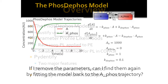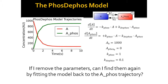The Phos-Dphos model is very simple. A gets phosphorylated at a rate K-Phos and dephosphorylated at a rate K-Dphos, and as you might expect, the system converges to a steady state.